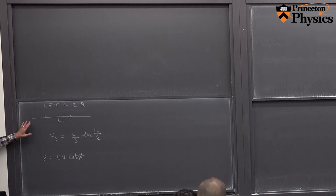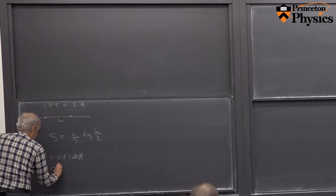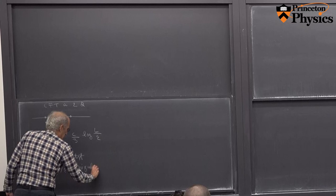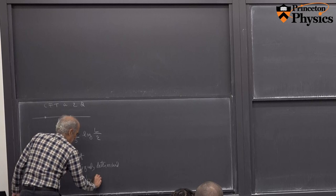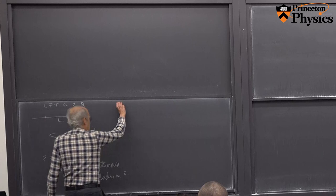We computed this, and we also observed that because, on dimensional grounds, S is a function only of the ratio L over epsilon, it's uniquely determined by dependence on epsilon. Just because, on dimensional grounds, it's a function only of the dimensionless ratio L over epsilon.